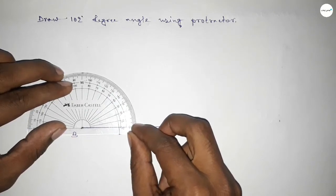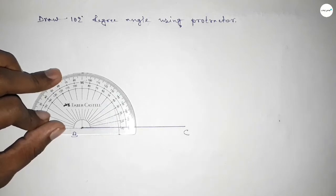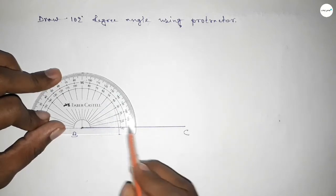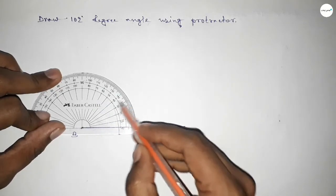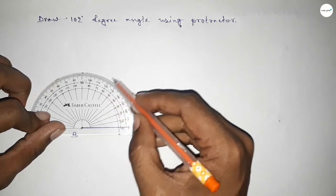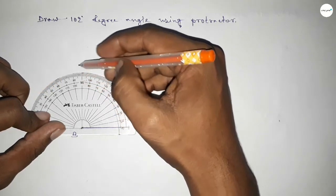So this is starting angle: 0, 10, 20, 30, 40, 50, 60, 70, 80, 90, this is 100, 102. So this is 102 degree angle.